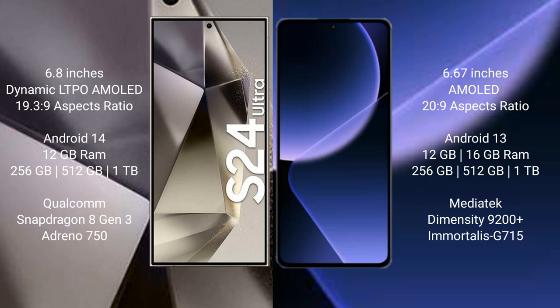Samsung Galaxy S24 Ultra comes with 12GB RAM and 256GB, 512GB, or 1TB internal storage options. It is powered by the Qualcomm Snapdragon 8 Gen 3 processor with an Adreno 750 GPU.